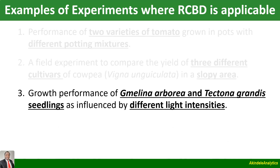A third example is an experiment where we're interested in studying the growth performance of two tree species — Merlina arborea and Tectona grandis — whose seedlings are influenced by different light intensities. We want to compare which one grows faster. But the area we are using has different light intensities: some areas are darker, some are under shade, some receive more light intensity. So we have to partition the area based on light intensity and then plant our seedlings within each light intensity block.